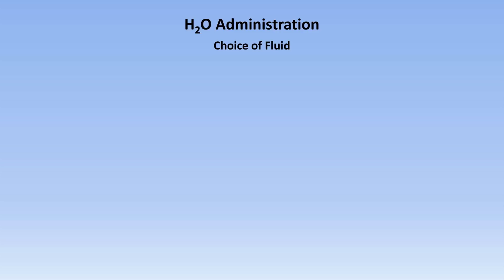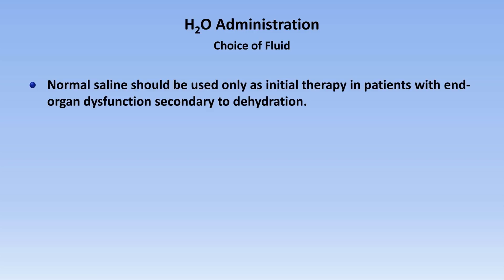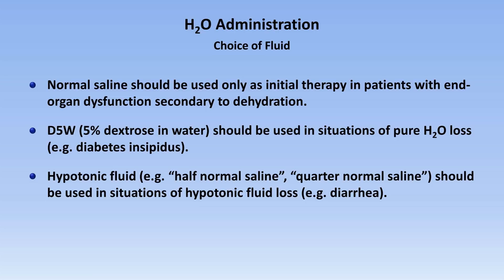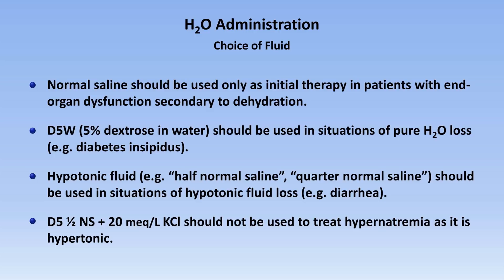For patients requiring IV fluids, normal saline should be used only as initial therapy in patients with severe volume depletion manifesting as end-organ dysfunction or hemodynamic instability. Even if normal saline is technically hypotonic relative to the patient's hyperosmolar state, this difference is usually negligible and more than offset by ongoing free water loss — in other words, hypernatremia often worsens in patients given normal saline. Another option is D5W, a solution of 5% dextrose in water, which should be used in situations of pure water loss such as DI. Hypotonic fluid such as half normal saline or quarter normal saline should be used in situations of hypotonic fluid loss such as diarrhea. The conventional IV maintenance fluid of D5 half normal saline plus 20 potassium should not be used to treat hypernatremia as it is actually hypertonic.